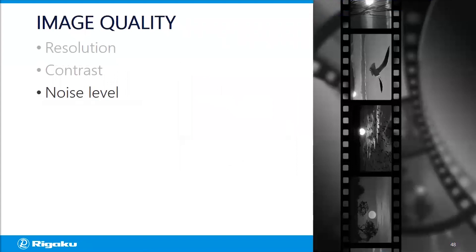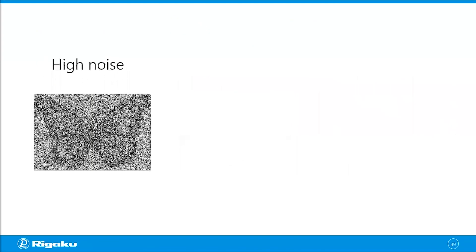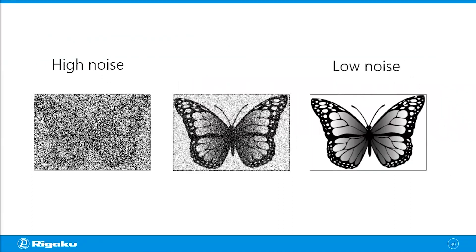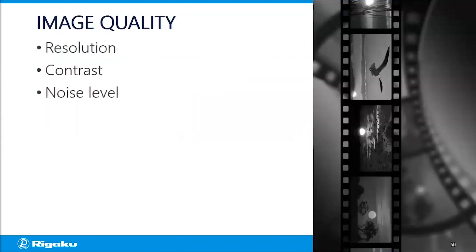The last factor is noise level. This is a really noisy image — you can barely see what's in it. This one is a little better, and this one is a lot better. When it comes to noise level, the lower the better. So resolution, contrast, and noise level are the three important factors when thinking about image quality.